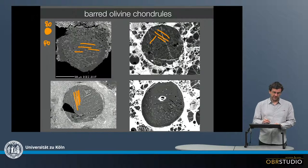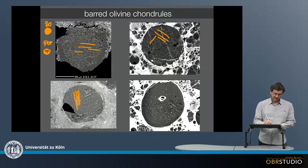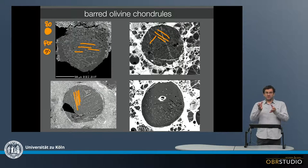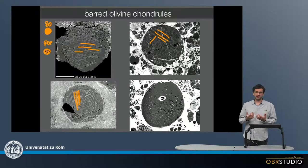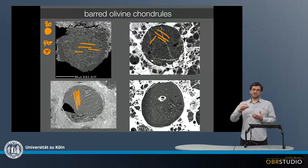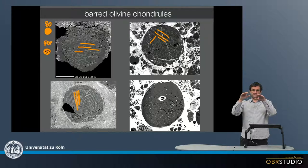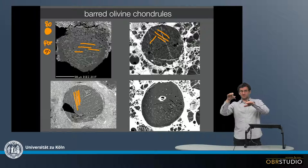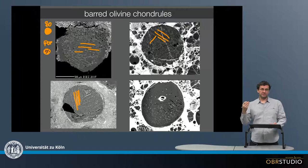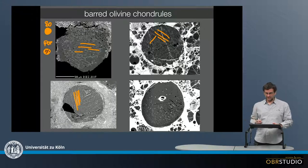The porphyritic olivine and porphyritic olivine-pyroxene chondrules also were once molten, but these had a number of seed crystals in them. These seed crystals were the locations where the olivine, and maybe later also the pyroxene, formed. The melt for barred olivine chondrules must have been either at a very high temperature, which destroys all seed crystals, or at the same temperature as the porphyritic melt but for a longer time. So the porphyritic chondrule melt was at high temperature for a shorter time and retained some seed crystals, whereas the barred olivine chondrules did not.